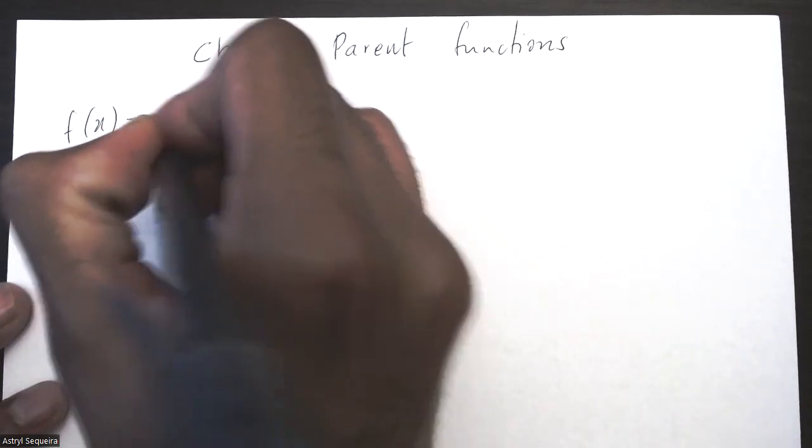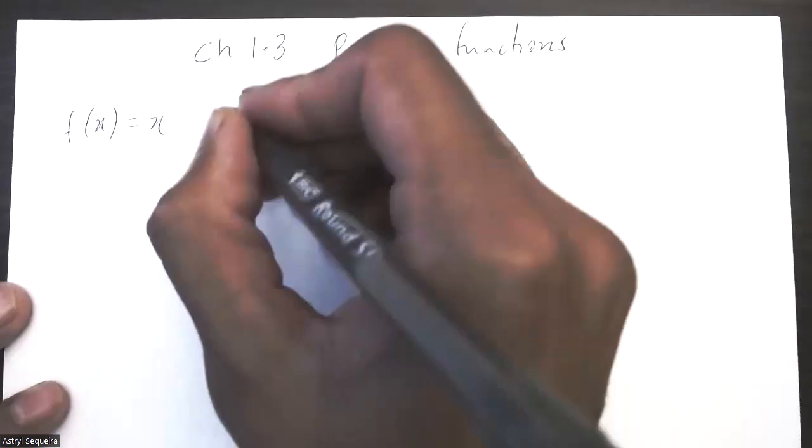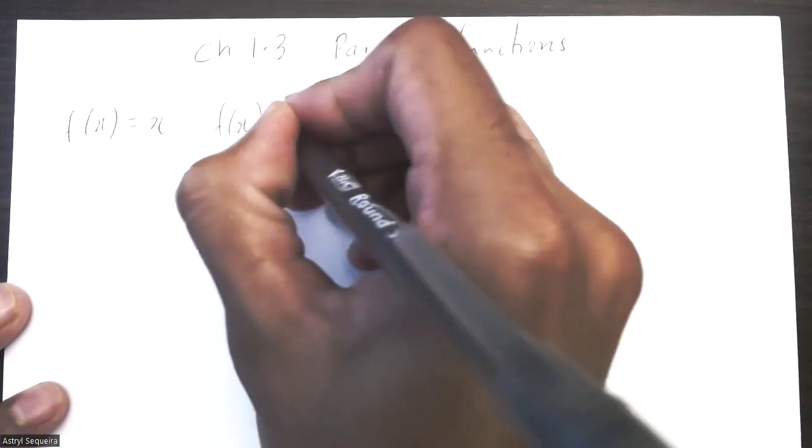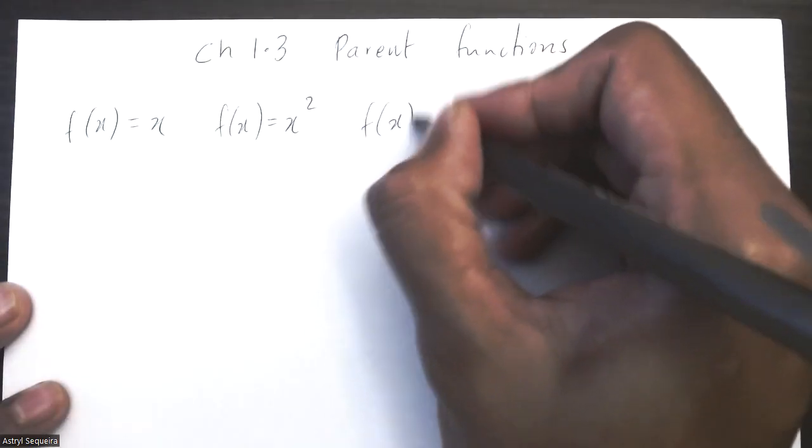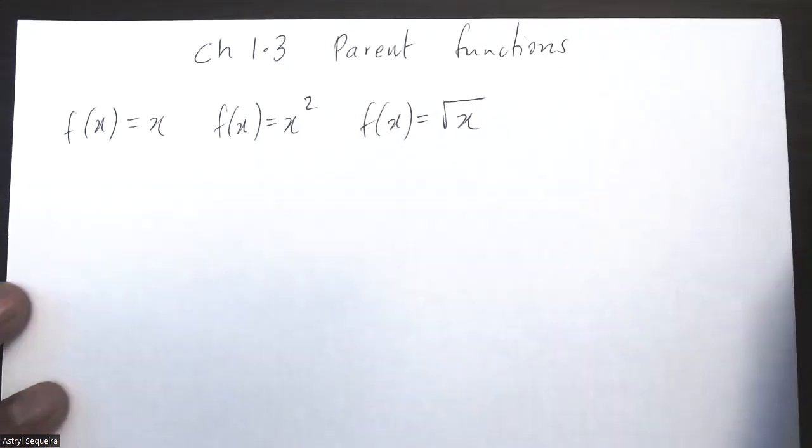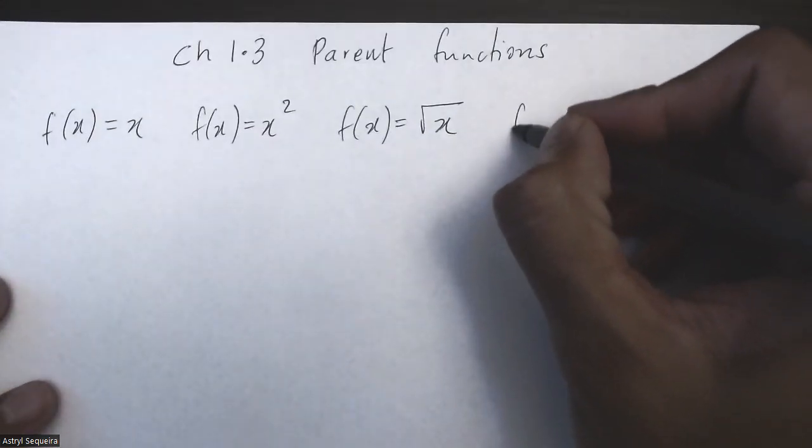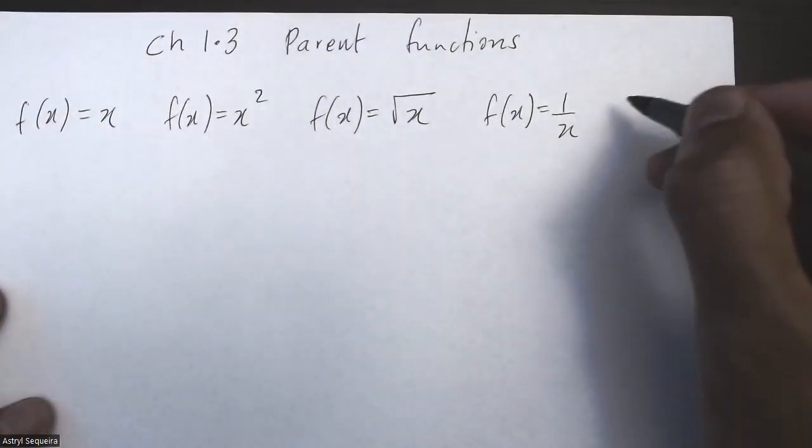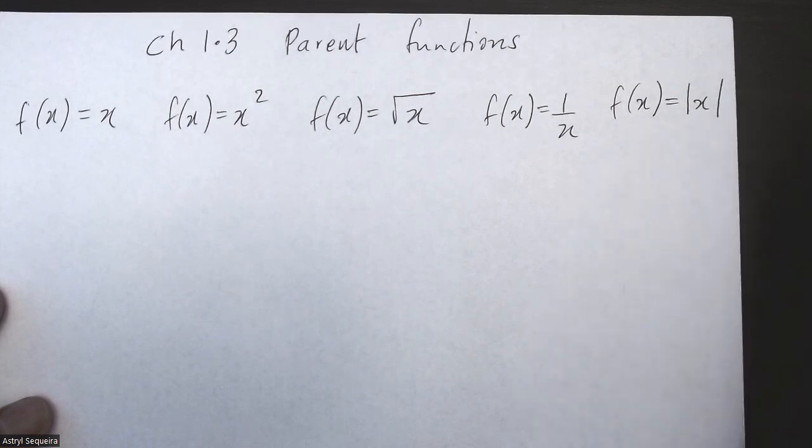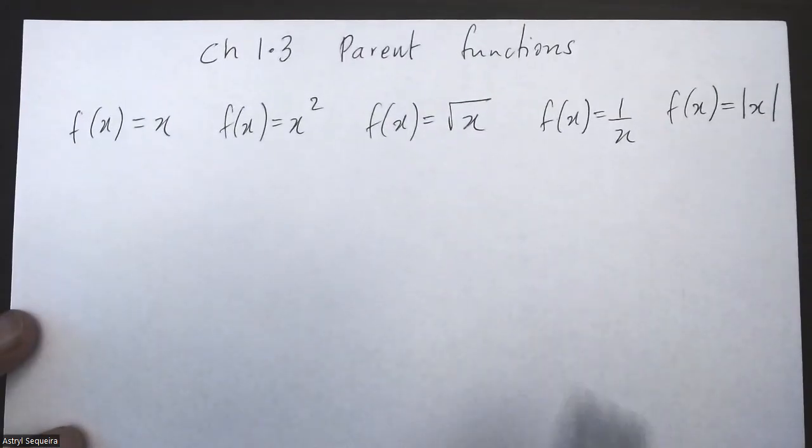f(x) equals x, and then you have a quadratic function, so f(x) equals x squared. You have your radical function, which is root x. You have your reciprocal function, which is 1 over x. And the last one, I'll squeeze it here, is the absolute function, which is the absolute of x.